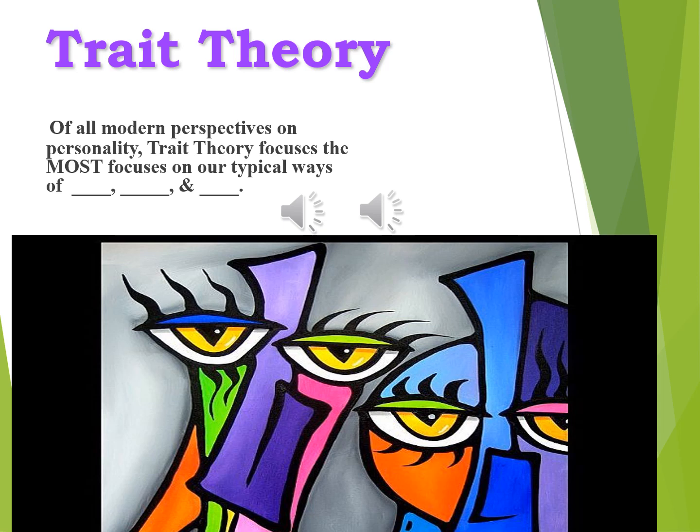The next dimension is extroversion and introversion, which we looked at earlier in the course to determine which one you were — or maybe you were in the middle. Please note that all of these are dimensions; for each one you could be at one end or the other. The next trait is agreeableness — many students mistakenly put 'aggression,' but that is not a personality trait. An agreeable person is often accommodating, pleasant, and good to be around.